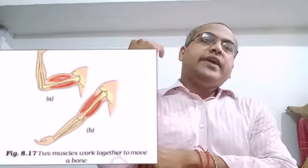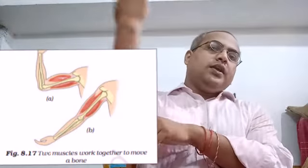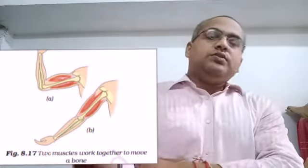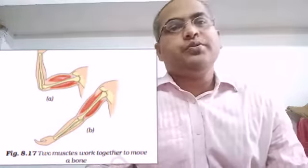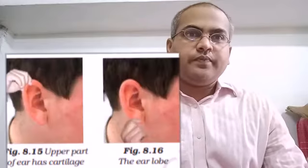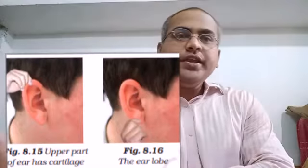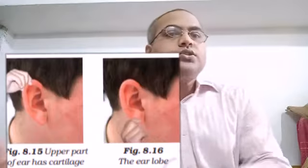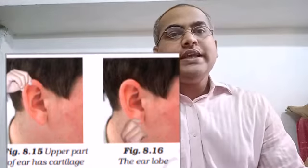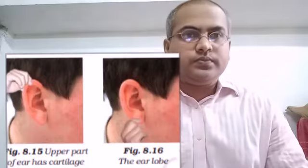Next is the hinge joint, seen at the elbow. It opens in only one direction — if it opened the other way you would need to visit an orthopedic doctor. The knee is also a hinge joint, because both allow movement in only one direction, just like a door hinge.